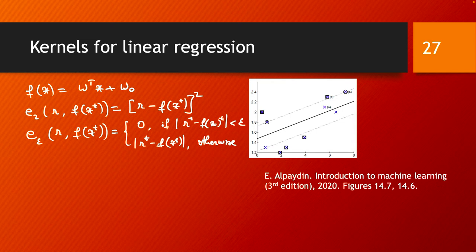Also, the error at a data point contributes to the global error function in a linear fashion rather than quadratically as with sum of squares. In that sense, this epsilon-sensitive error function is somewhat more tolerant to noise — noise contributes less to the overall error function.